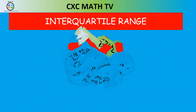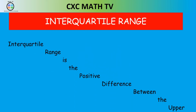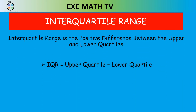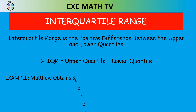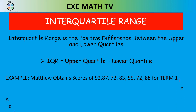Next is the interquartile range. The interquartile range is the positive difference between the upper quartile and the lower quartile: IQR = Q₃ − Q₁. To find the IQR, we need the upper and lower quartiles from Matthew's add math scores.